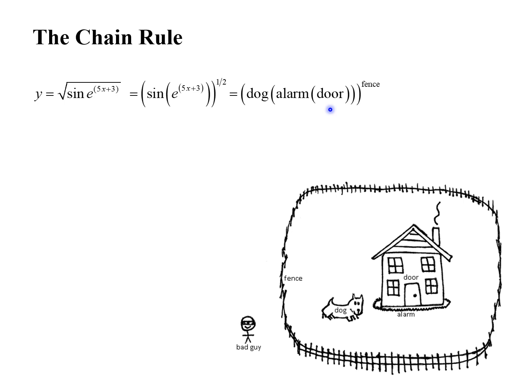I'm not saying people should break into people's houses — this is just an analogy for the chain rule. So the very first thing we're going to do is take care of the fence. Taking care of the fence, because it's on the outside, we really have to take the derivative of something to the 1 half power.